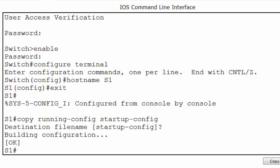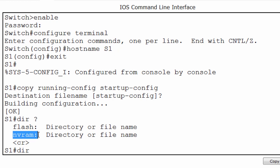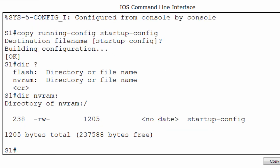I can verify the location of my saved configuration file by putting in the command dir for directory, then a space and a question mark. You can see there are two different types of storage that I have access to: flash memory and NVRAM. Both of these are non-volatile. The flash memory holds the iOS operating system and the NVRAM holds the configuration file. I'll put in NVRAM with a colon and press enter, and you can see there's the startup-config file.